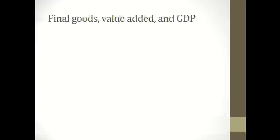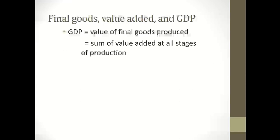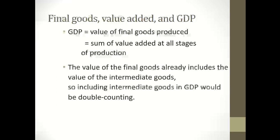GDP is the value of final goods produced, and it equals the sum of all value added at all stages of production. The value of the final good already includes the value of all intermediate goods, so including intermediate goods separately in GDP would result in double counting.